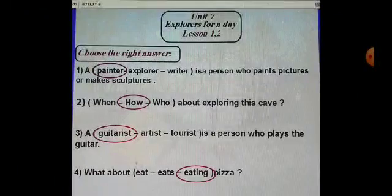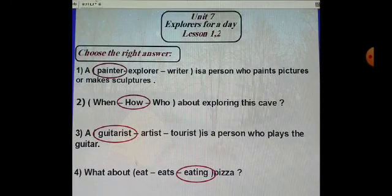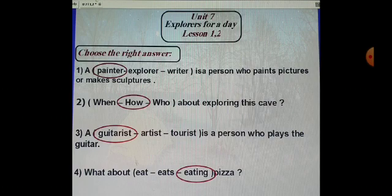Exercise number 1. Choose the correct answer. Number 1. A person who paints pictures or makes sculptures. A painter. Number 2. How about exploring this cave. This is a suggestion. How about or what about. Number 3. A person who plays the guitar. A guitarist. Number 4. What about eating pizza.